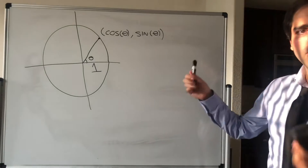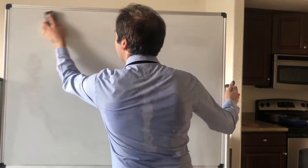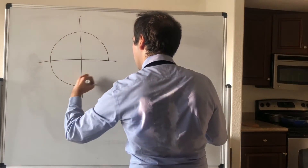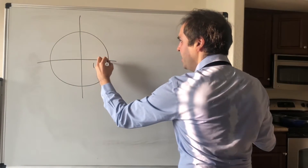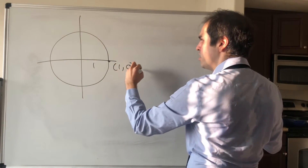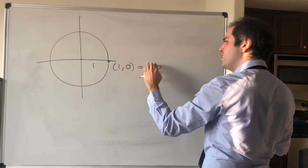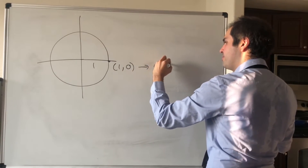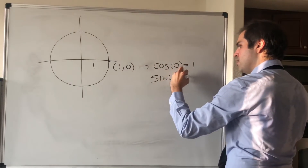Let me tell you some very important values. Remember, the circle has to be radius one. You start with the point (1, 0). What that tells you is, for an angle of zero: cosine of zero equals 1, and sine of zero equals 0.